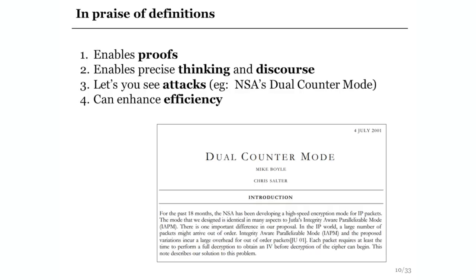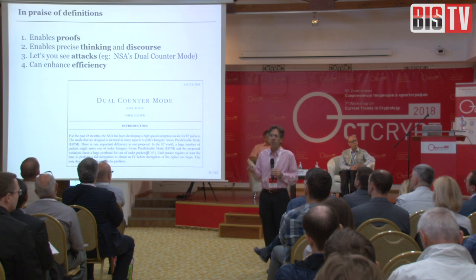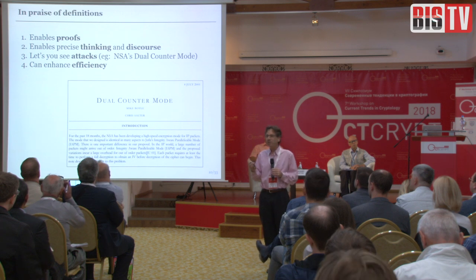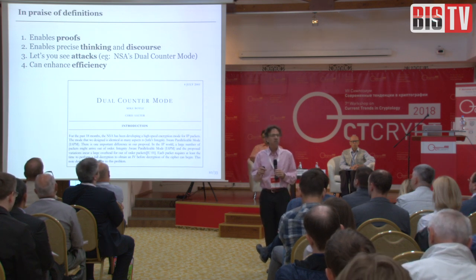Definitions actually enable attacks. A nice example is the dual counter mode proposed around 2001 by the NSA. The NSA claimed they had been working for a year and a half on this authenticated encryption scheme. And yet when I read it, I broke it on inspection in less than an hour. What I had that the NSA didn't have was an understanding of what a definition for authenticated encryption was. Finally, the presence of definitions allows us to reach for schemes that are much more efficient, because when you have a crystal clear understanding of the goal, you can cut out everything that isn't necessary for achieving it.